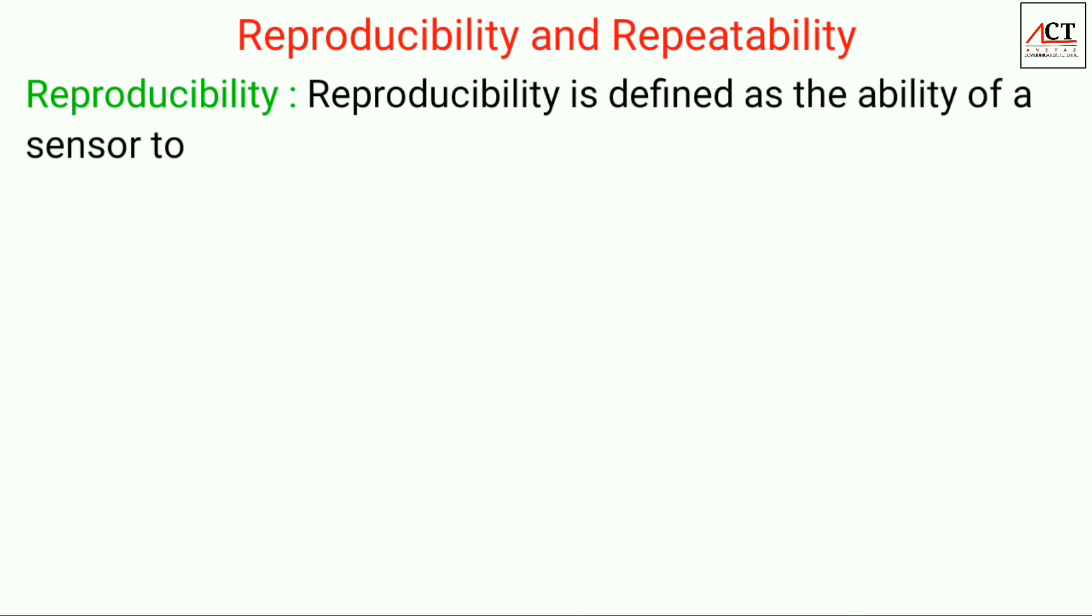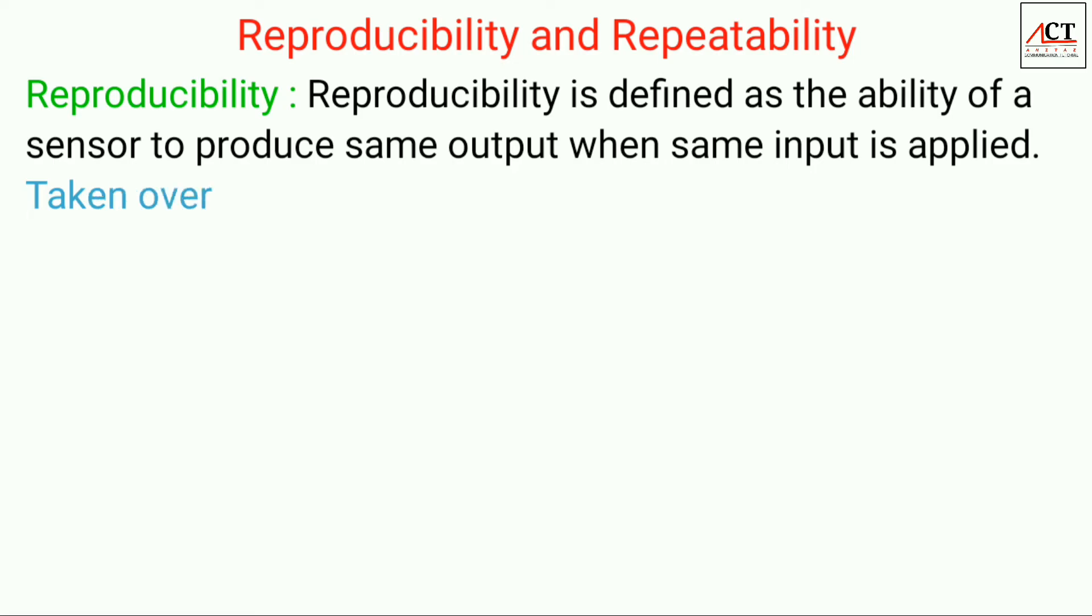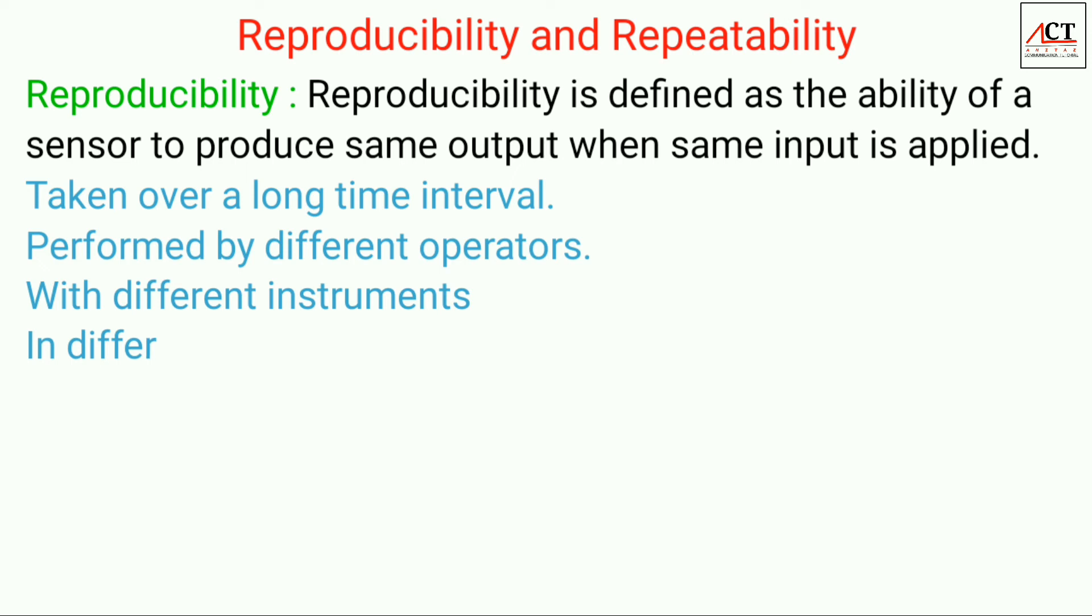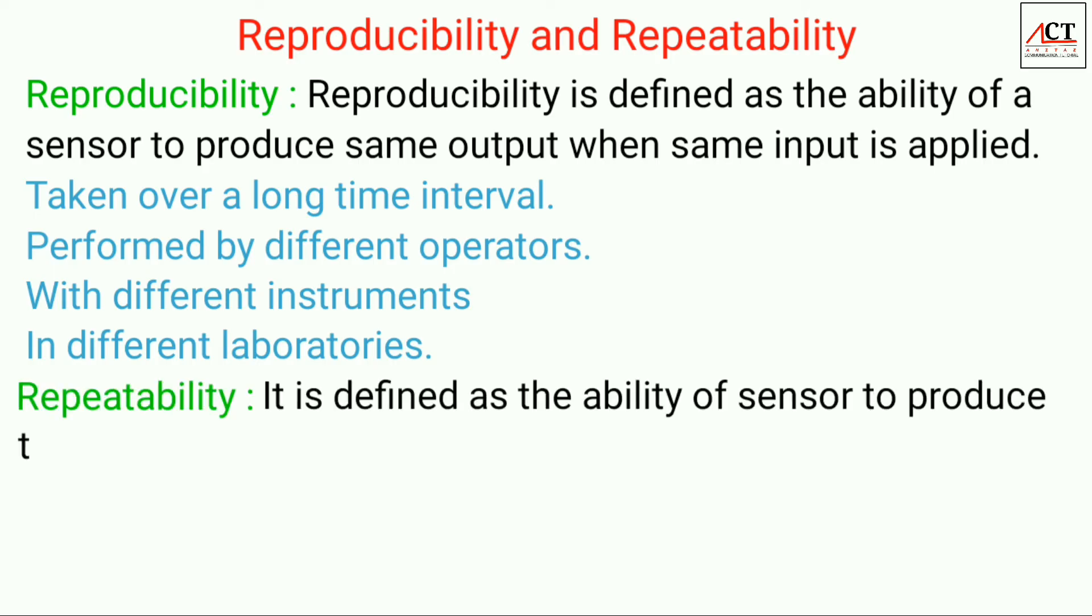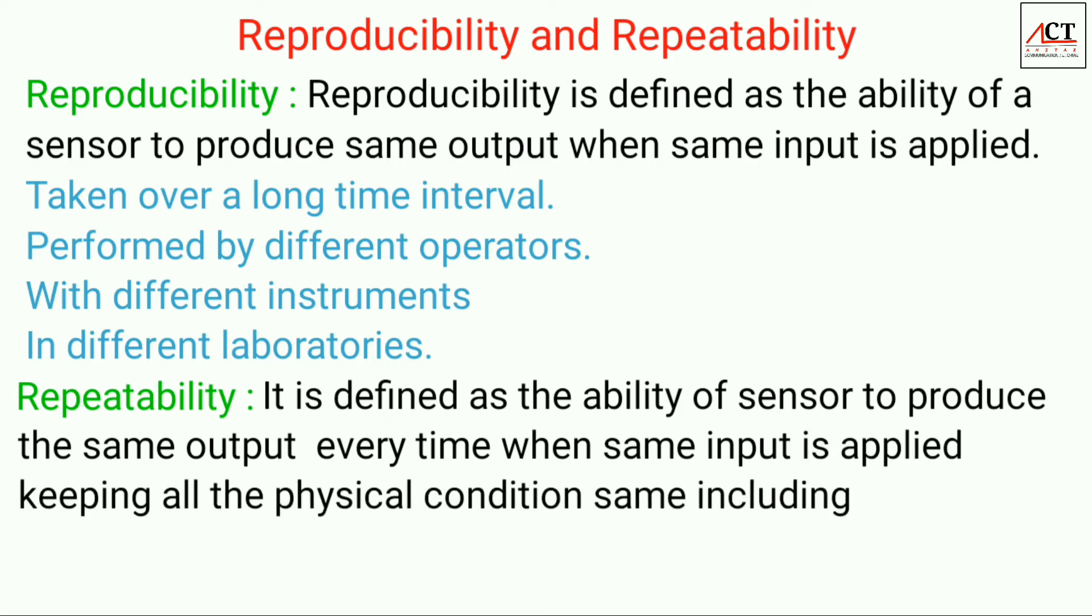The next static characteristic is reproducibility and repeatability. Reproducibility is defined as the ability of a sensor to produce the same output when same input is applied, taken over a long time interval performed by different operators with different instruments and in different laboratories. There is a slight difference between reproducibility and repeatability. Repeatability is defined as the ability of a sensor to produce same output every time when same input is applied, keeping all the physical conditions same.